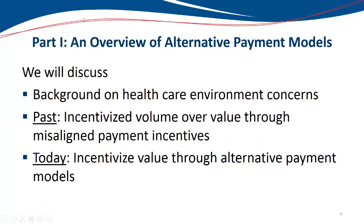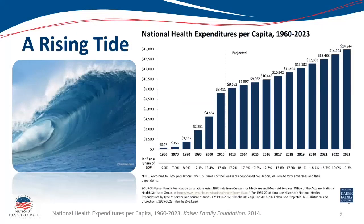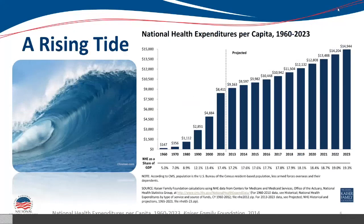Let's begin with a discussion about one of the big concerns we're all very aware of in healthcare — the expenditures in the United States on healthcare in general. If you take a look at this figure in this graph, you'll see the expenditures per capita, per person in the United States, and the growth in those expenditures between 1960 and what's estimated to be in 2023.